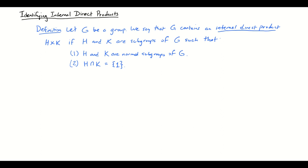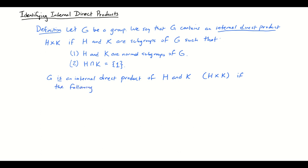Those are actually the only two conditions required for G to contain an internal direct product of H and K. However, we can further say G is an internal direct product of H and K — or H times K — if the following additional condition is satisfied in addition to the first two. That third condition is that H times K, the set consisting of anything from H times anything from K, equals all of G. So G can contain an internal direct product or it can be the internal direct product. It is the internal direct product if G consists only of products of elements of H and elements of K and nothing else.